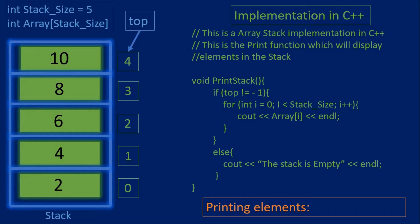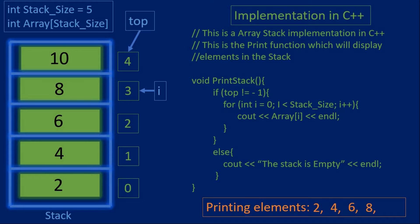The first time the loop will print out 2, since the index variable i starts at 0. We increment i to 1 and then print out 4, then increment i to 2 and print out 6, then increment and print out 8, and finally increment i for the last time and print out 10. We have printed out all the elements in the stack. The else statement would have been executed if the stack was empty. In a moment I will show you the actual stack program as we compile and run the code.